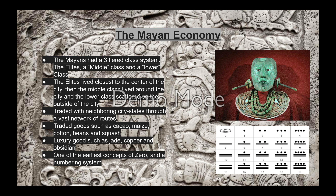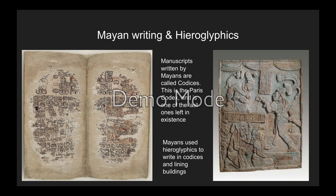The Maya economy had a three-tiered class system: the elites, middle class, and lower class, with elites living at the center of the city and lower class living in huts outside. They traded with neighboring city-states through a vast network of routes, trading goods such as cacao, maize, cotton, beans, and squash, and luxury goods like jade, copper, and obsidian. They also had one of the earliest concepts of zero in a numbering system. Manuscripts written by Mayans, called codices, exist in only about four surviving copies. They also had a system of hieroglyphics, with one image showing a man paying tribute to a ruler and bringing him slaves.